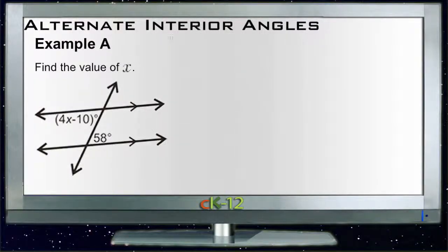Let's review the examples for alternate interior angles. Remember that alternate means on opposite sides and interior means it's on sort of the inside of the shape.